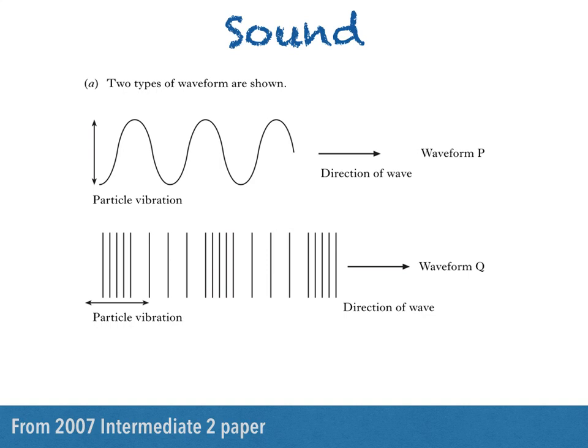Then we see waveform P, where the arrow representing the direction of the wave is drawn at 90 degrees to the arrow representing particle vibration, and waveform Q, where the direction of the wave is parallel to the direction of particle vibration.